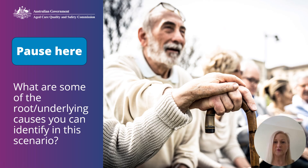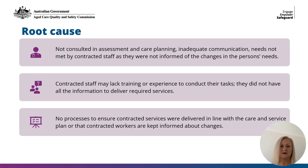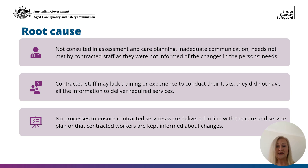Let's pause to think about what some of the root or underlying causes are in this scenario. Three root causes have been identified: First, Benny hasn't been included or consulted in his assessment and care planning — there's a lack of communication and his needs are not met by contracted staff as they were not informed of changes in his needs. Second, contracted staff may lack training or experience to conduct their tasks and didn't have all the information needed, including the person's preferences and choices. Third, the provider didn't have processes to ensure contracted services were delivered in line with the specifications outlined in Benny's care and service plan, or that contracted workers are kept informed about changes.